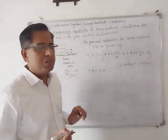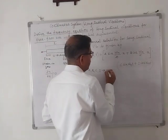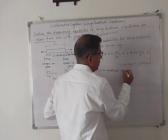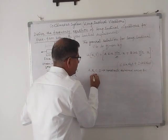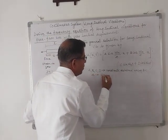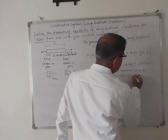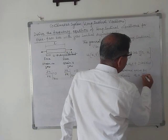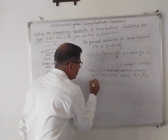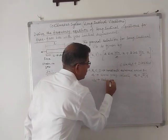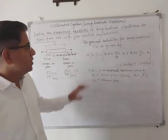Here A, B, C, and D are constants which can be obtained by using the boundary conditions. The small c is the wave propagation velocity, given by √(E/ρ) for longitudinal vibration. The term ωn is the natural frequency. This is the complete general solution of the longitudinal vibration.